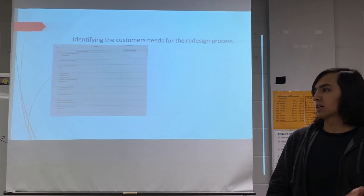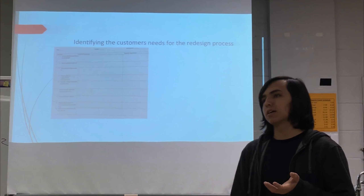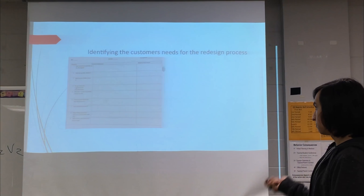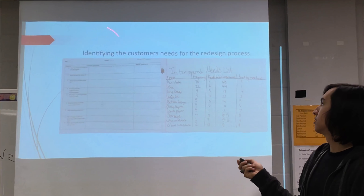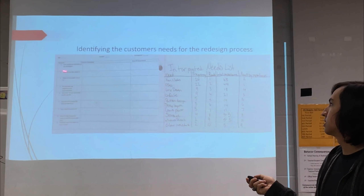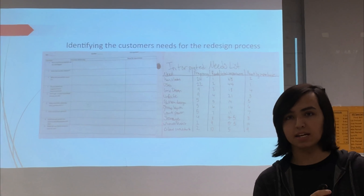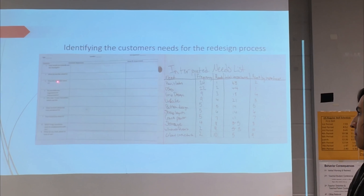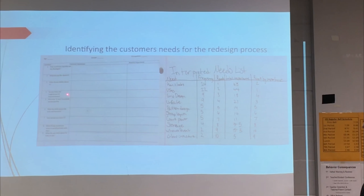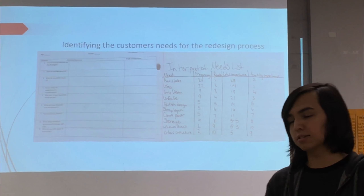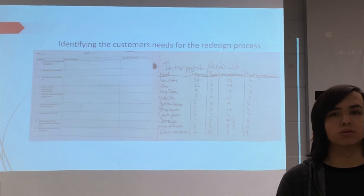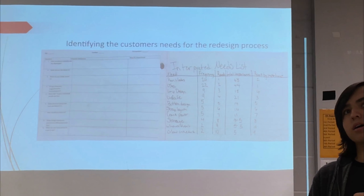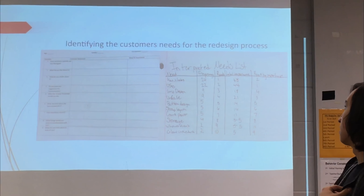To improve upon this flashlight, we had to understand what exactly our customers wanted us to improve upon. So we did so in interviews by asking them questions such as: How would you typically use this flashlight? What do you like about it? What do you dislike about it? Do you have any suggestions for improvements? Who would use it in your household? These are important questions to ask to understand exactly what the customer would like us to improve upon.